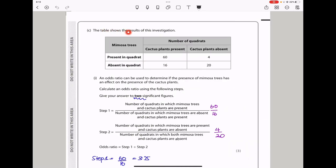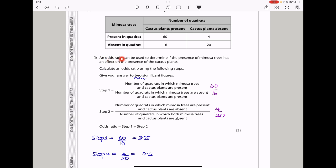Next, the table shows the results of this investigation. We see for each plant as well as the quadrats in which the plants were present or absent. They say an odds ratio can be used to determine if the presence of mimosa trees has an effect on the presence of the cactus plant. They want you to calculate an odds ratio using the following steps. In step 1, the number of quadrats in which mimosa trees and cactus plants are present divided by the number of quadrats in which mimosa trees are absent but cactus plants are present. So here we can see it's going to be 60 divided by 16.